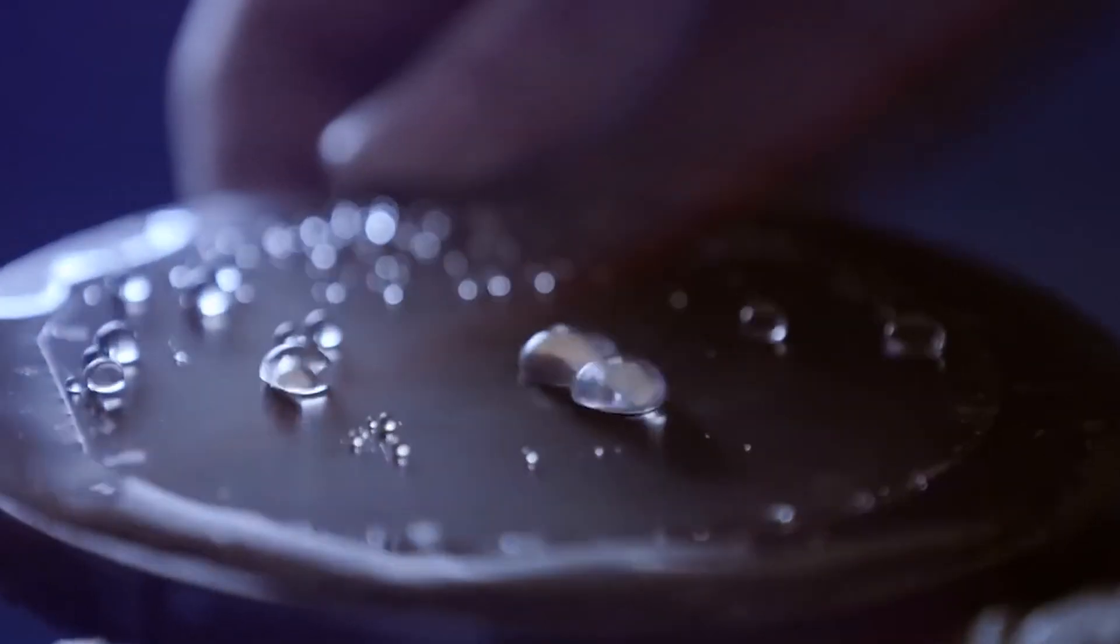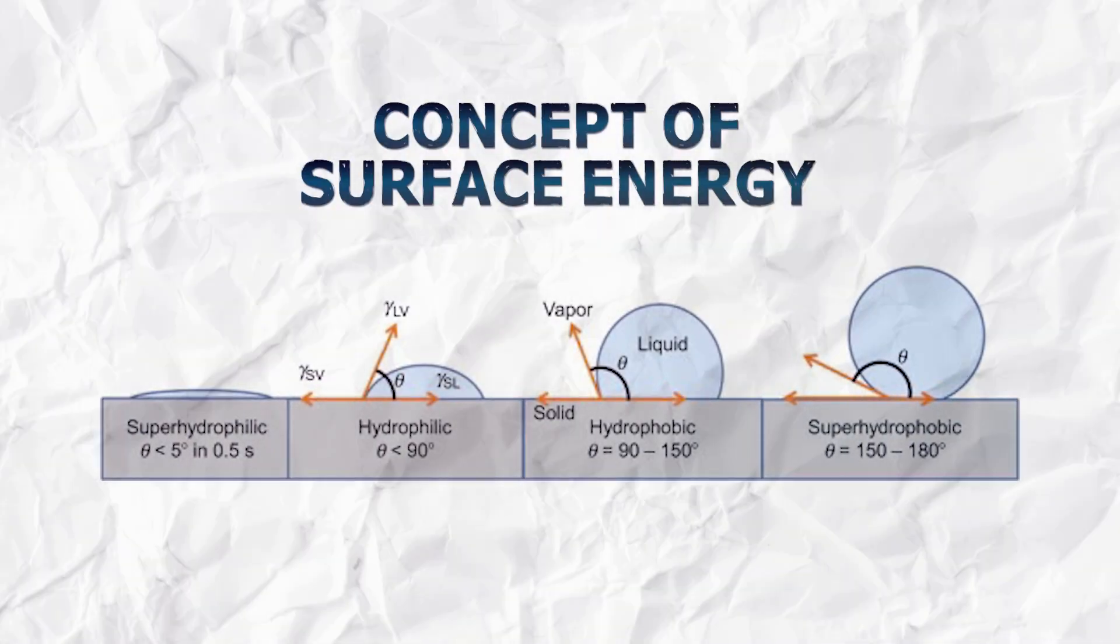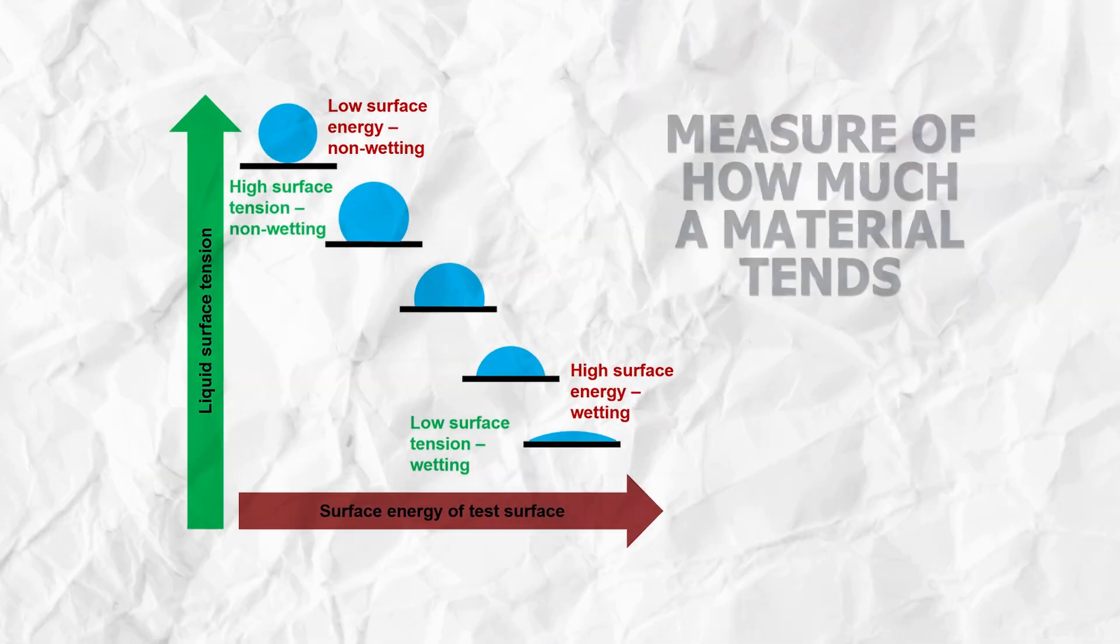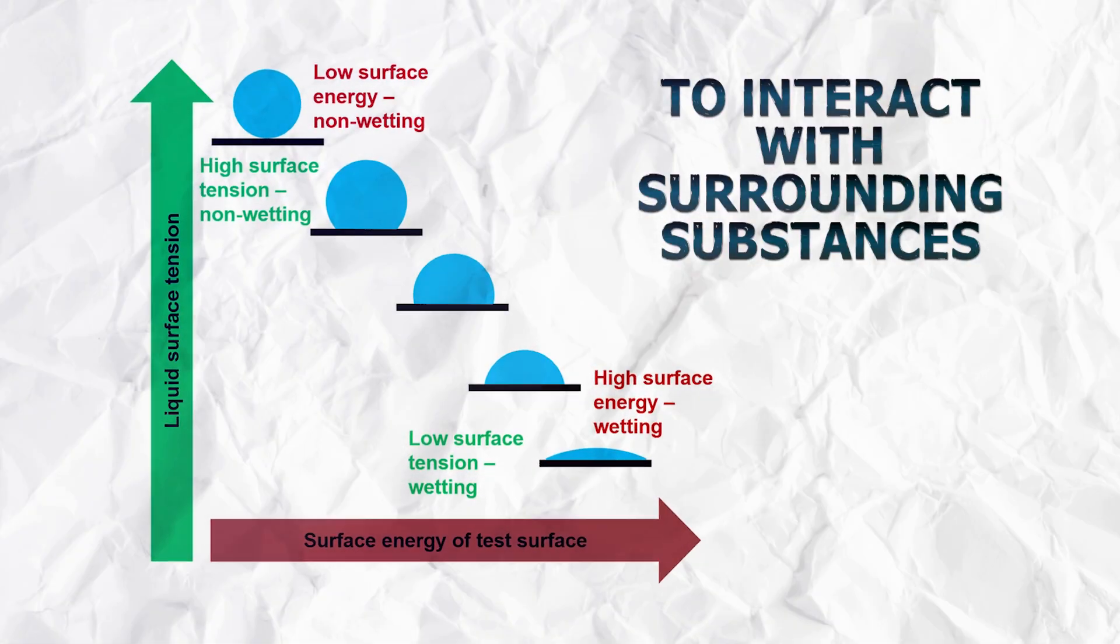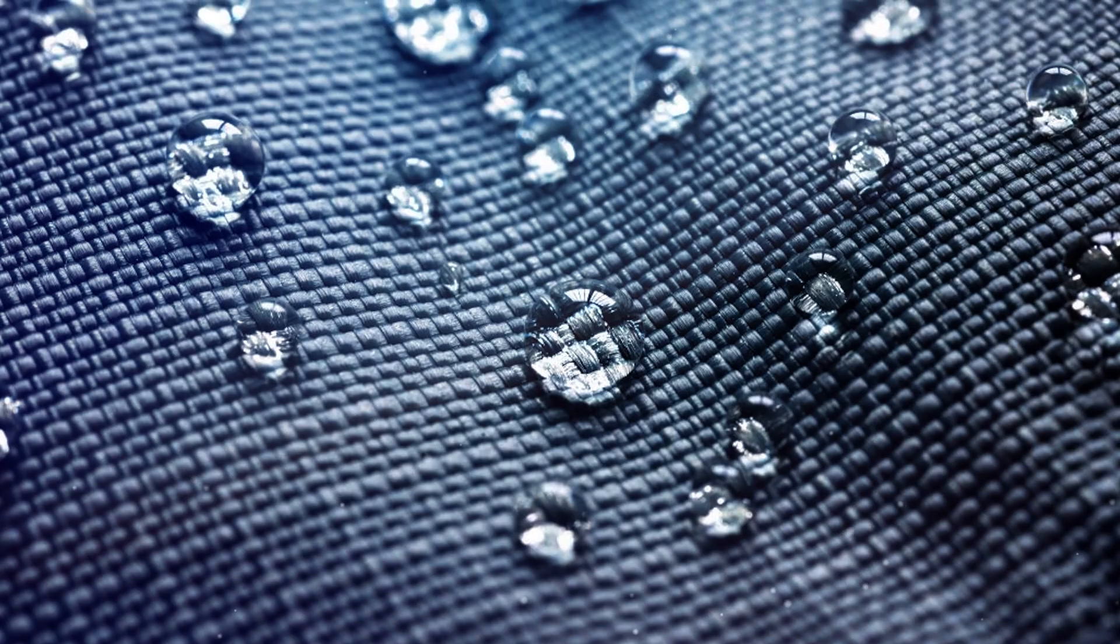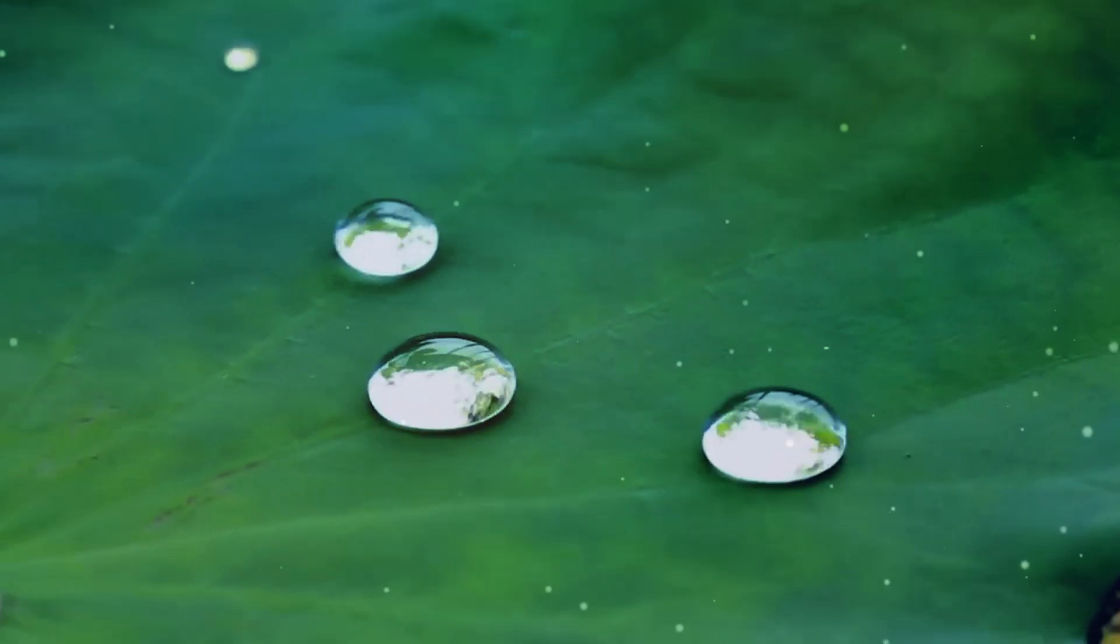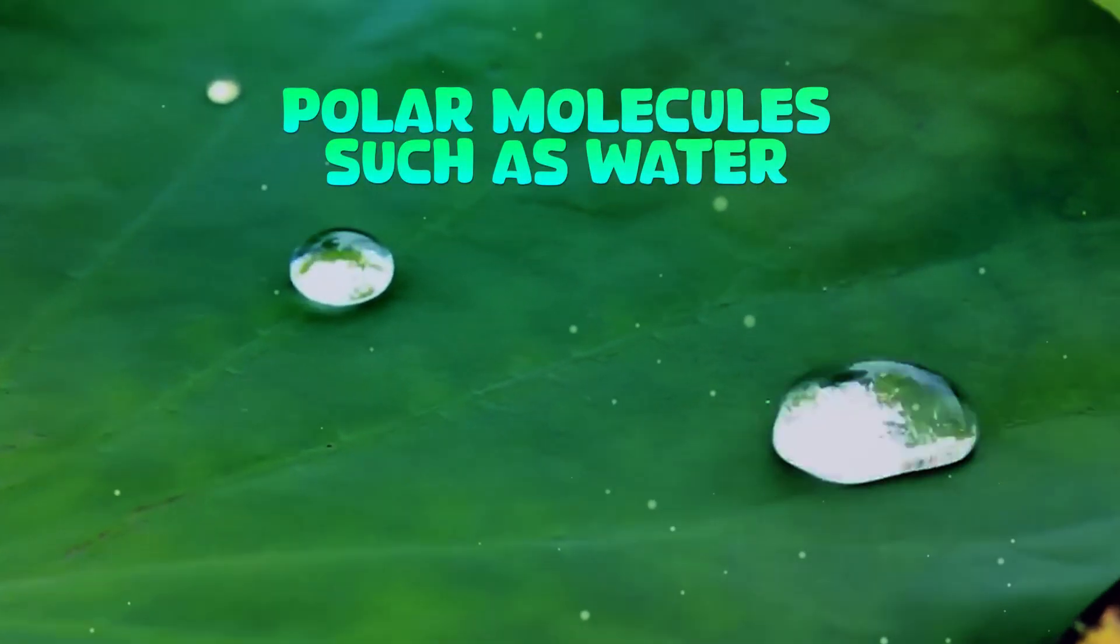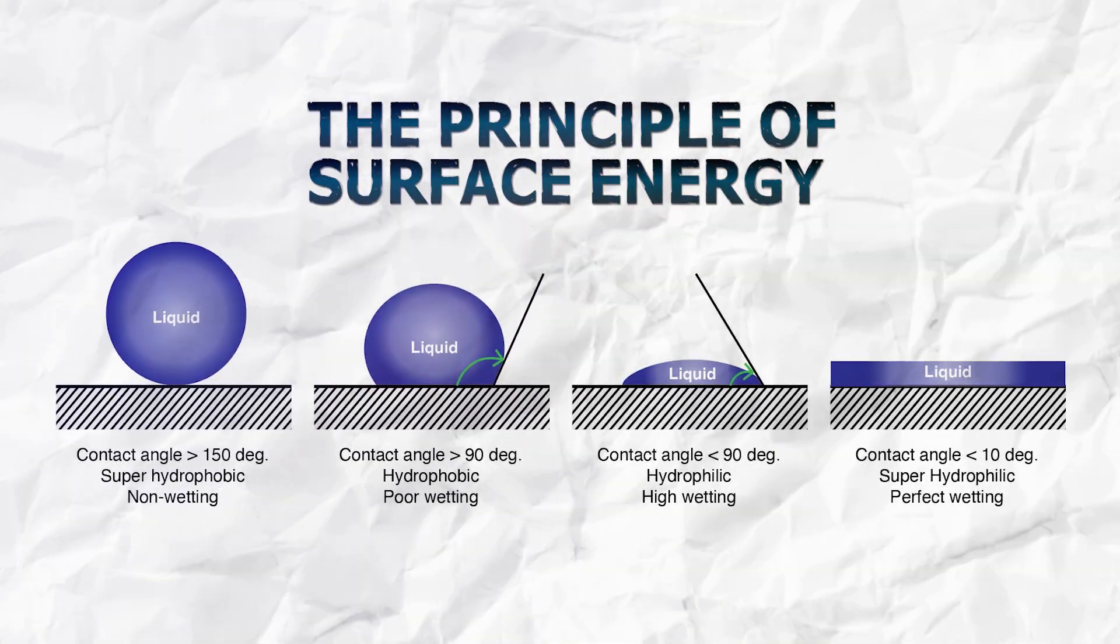Let's begin by exploring the fundamental concept of surface energy. At the core of hydrophobic behavior is the concept of surface energy. Surface energy is a measure of how much a material tends to interact with surrounding substances. Hydrophobic coatings are characterized by low surface energy, indicating their reluctance to engage with polar molecules such as water. The principle here is simple: materials with low surface energy repel water.